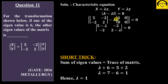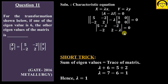Expanding the determinant of (A - λI): the (1,1) entry becomes 5 - λ, and we compute the full 2×2 determinant. This gives (5 - λ)(2 - λ) - (-2)(0) = 0, simplifying to (5 - λ)(2 - λ) - 4 = 0, yielding eigenvalues λ = 1 and λ = 6.